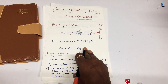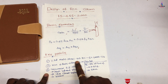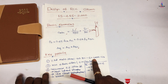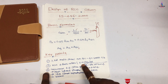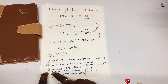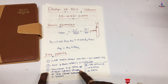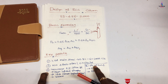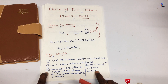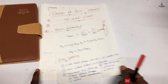Key points for column design: the percentage of main steel should be 0.8% to 6% of the gross cross-section. A minimum of 4 bars is used for rectangular column sections and 6 bars for circular sections. The transverse reinforcement pitch must not exceed the least of: least lateral dimension, 16d, and 300 mm. The lateral tie diameter is the greater of 0.25 times the main bar diameter and 5 mm.